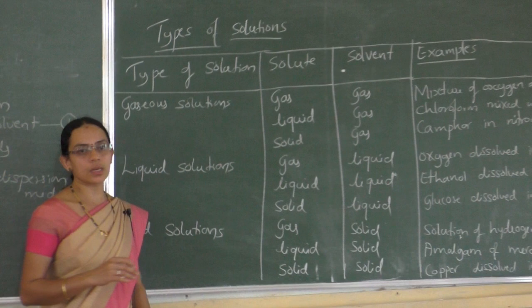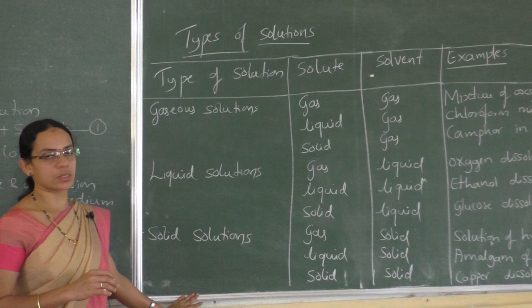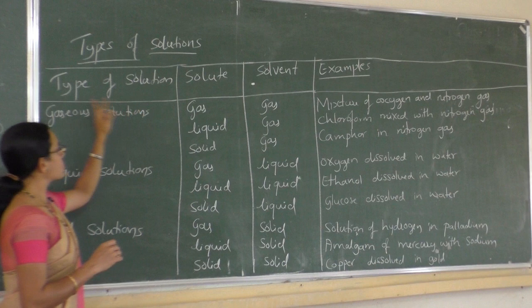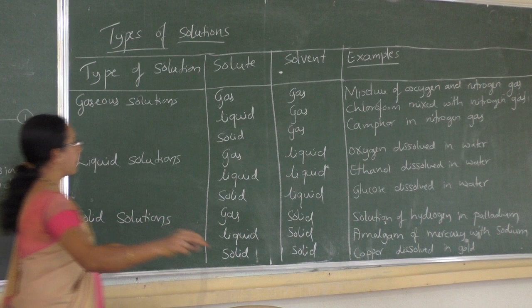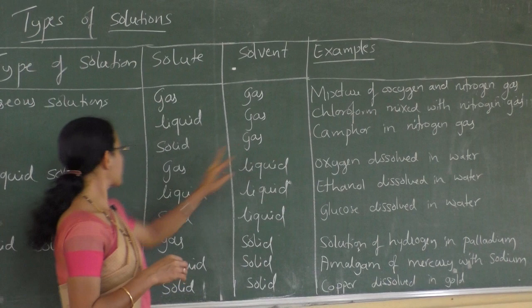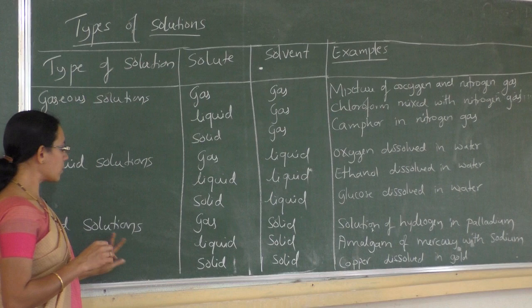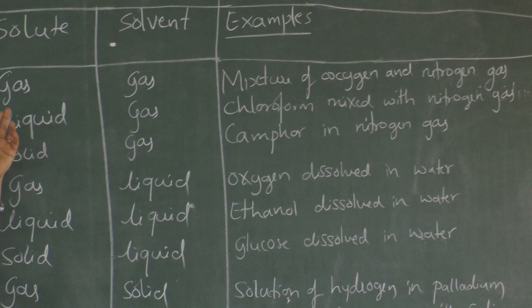Based on the physical state of solute and solvent, we have nine types of solutions. In a gaseous solution, the solvent is always gas. In a liquid solution, the solvent is always liquid. And in a solid solution, the solvent is always solid. The solute may be gas, liquid, or solid in each case. Let us take the first type: gaseous solutions.